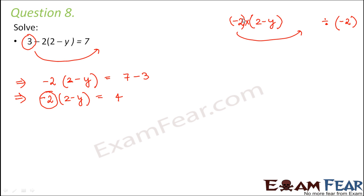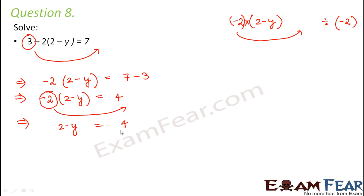In this case, the 2 is not getting subtracted — minus 2 is a negative number getting multiplied to another number. So the operation is multiplication. Therefore, minus 2 as a whole shifts to the other side and becomes divided. Shifting minus 2 gives us: 2 minus y on the left, and 4 divided by minus 2 on the right.